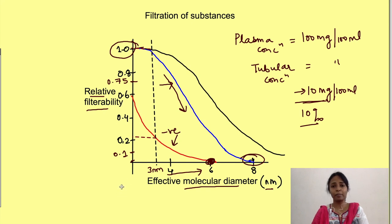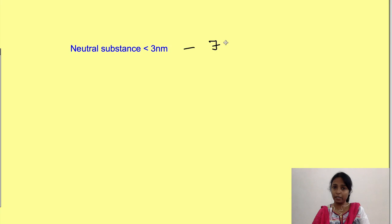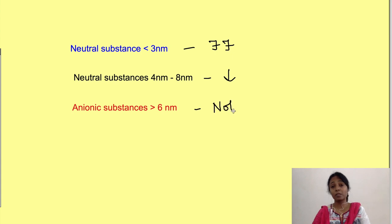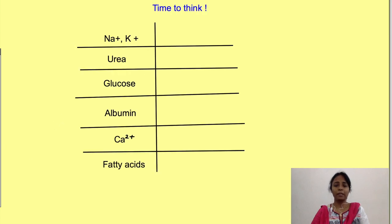For cationic substances, filtration is greater compared to neutral substances of the same size. In summary: neutral substances less than 3 nanometers are freely filtered; filtration decreases from 4 to 8 nanometers; anionic substances greater than 6 nanometers are not filtered at all. Freely filtered substances include water, electrolytes, and small uncharged organic molecules like glucose.